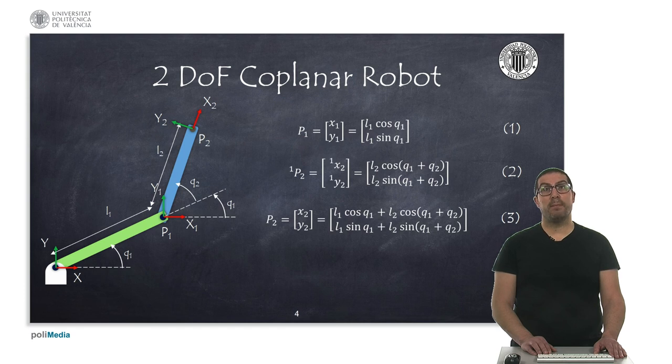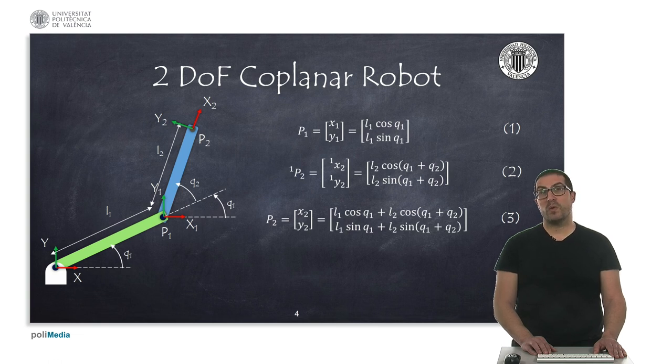If we add up both coordinates, we obtain the coordinates of point P2 with respect to the base of the robot, as indicated in equation 3. Therefore, equation 3 represents the direct or forward kinematic model of a coplanar robot with 2 degrees of freedom, in which we can express the coordinates of the end effector with respect to the robot base.